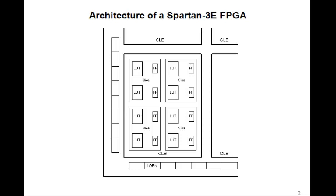Remember what the architecture of the Spartan 3E looked like. Here's the CLB. Each CLB has four slices, and each slice has two lookup tables. These lookup tables are what we've been using to create our combinational logic. They're 16 by 1 RAMs, which means they have a 4-bit input and one output. These 4-bit inputs to the lookup table can be used as addresses, and you can actually store data in these lookup tables so they behave like RAMs.